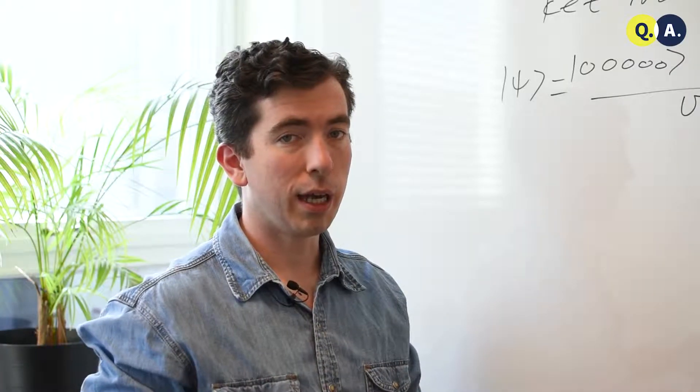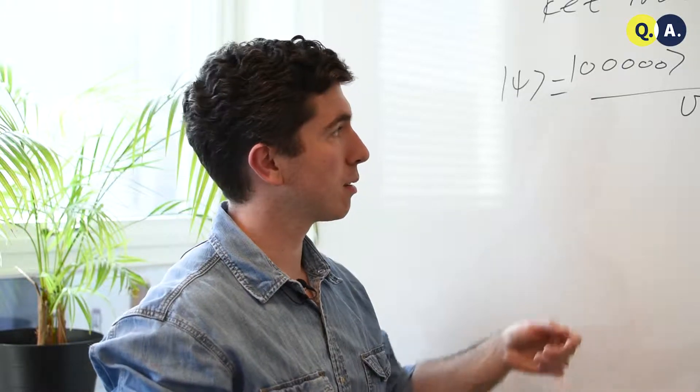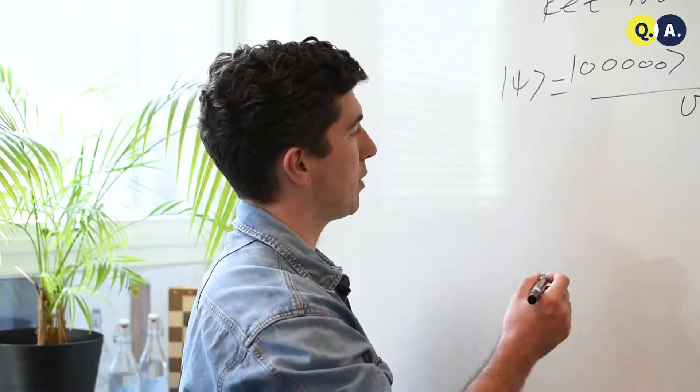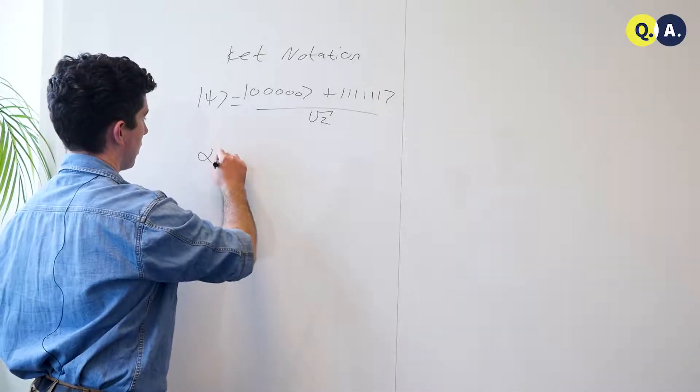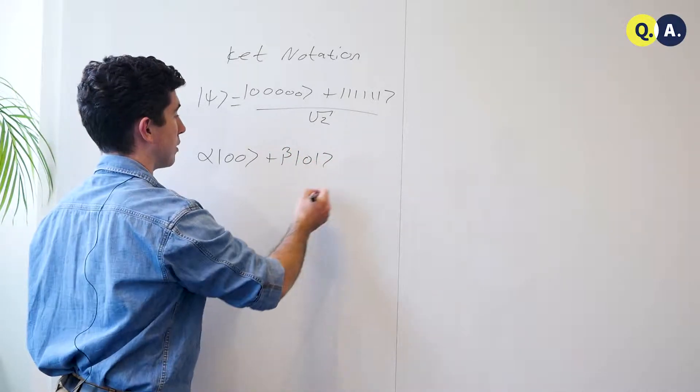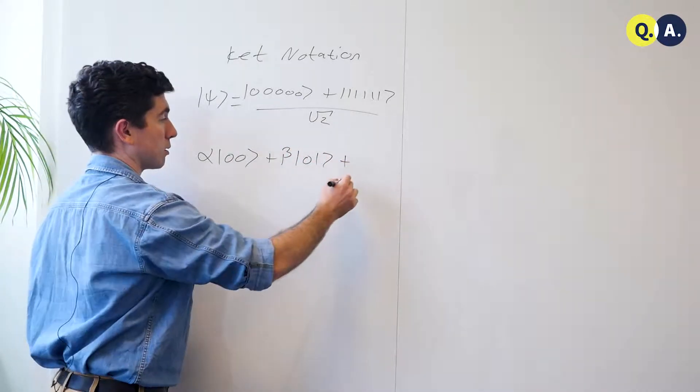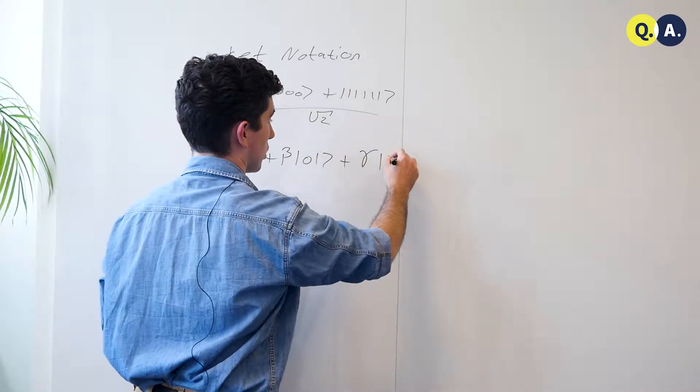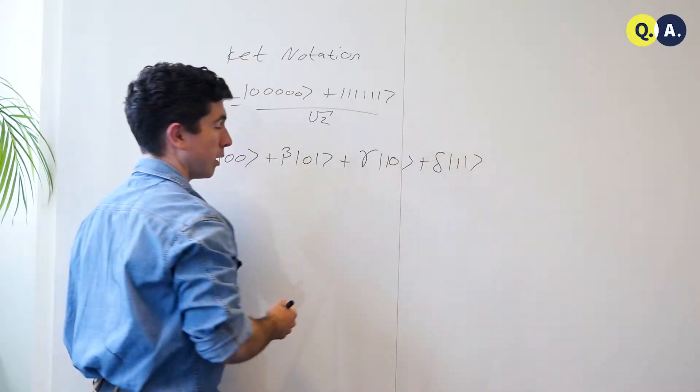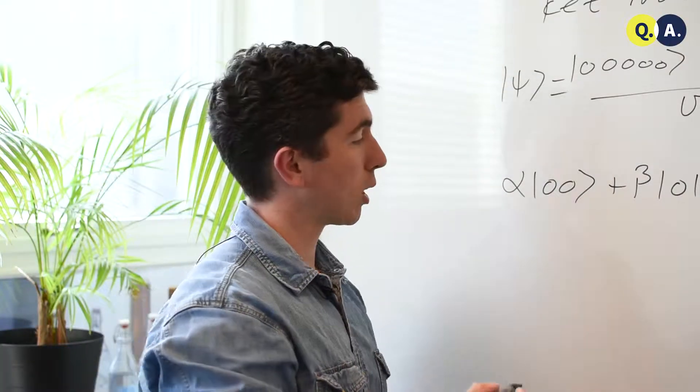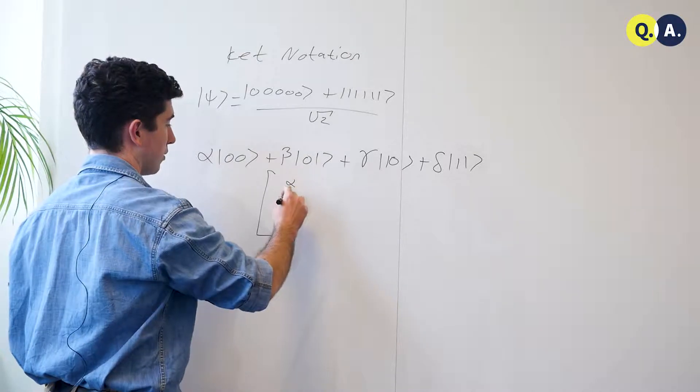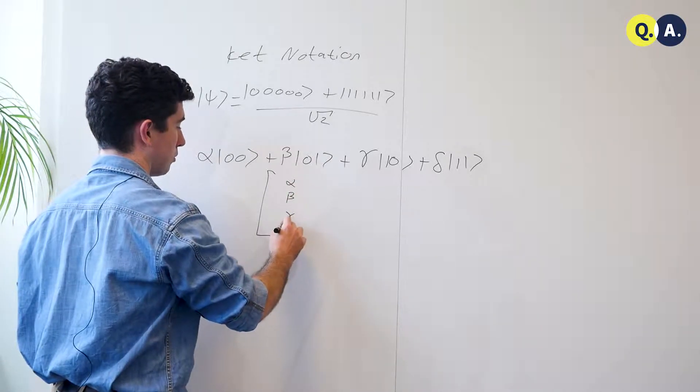Now if you don't have a compact description for the state like this, if you just have some arbitrary coefficients, it can be very painstaking and time consuming to write out something like beta times |01⟩, plus gamma times |10⟩, plus delta times |11⟩. Here you'd be better off to use something more like a column vector: alpha, beta, gamma, delta.